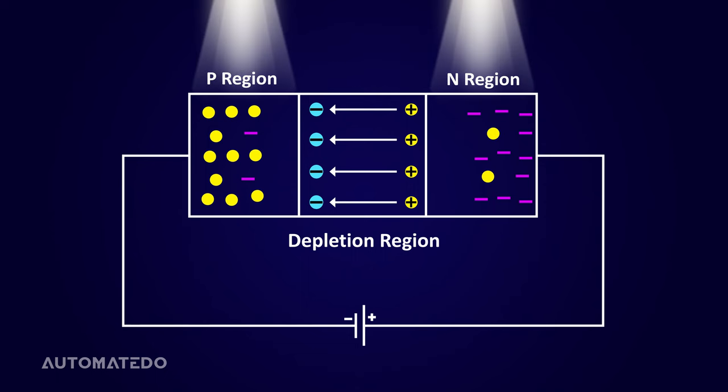If photon absorption happens outside the depletion region, somewhere in the P or N regions, the generated electron hole pairs will be recombined in the material. Thus, no photocurrent will be produced in the photodiode.